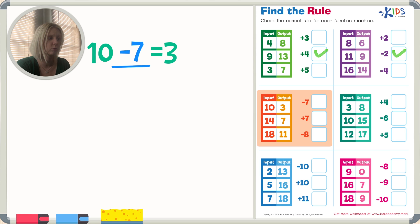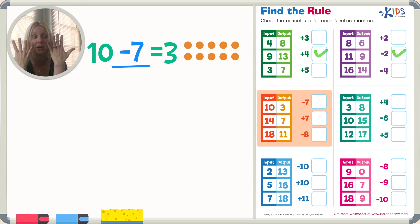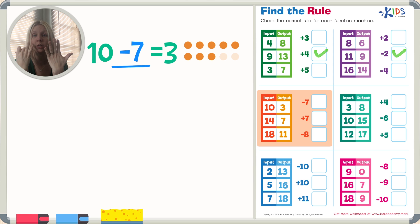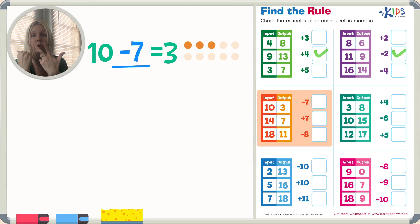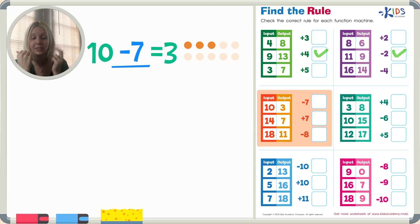We can count on our fingers since it's 10 and we've got 10 fingers. 10 minus 7: fold down 1, 2, 3, 4, 5, 6, 7 — which leaves us with 1, 2, 3. So is that correct? Yes, that is the answer.